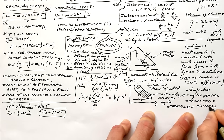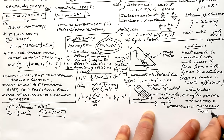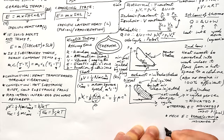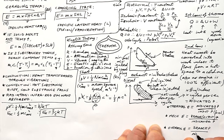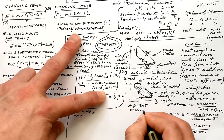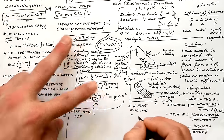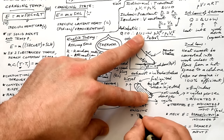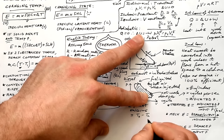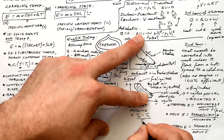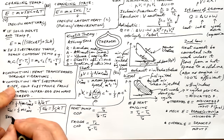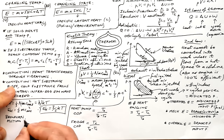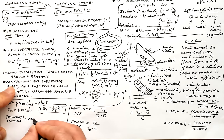Thermal efficiency equals indicated power divided by input power. Mechanical efficiency is brake power divided by indicated power — that's where power is lost due to friction. Overall efficiency is brake power divided by input power. Maximum theoretical efficiency of an engine is the difference in temperatures between the hot and cold space, divided by the temperature of the hot space. Coefficient of performance for heat pumps and fridges is basically the reciprocal of efficiency, giving a number bigger than one. For a heat pump we put hot temperature on top; for a fridge, cold temperature on top.